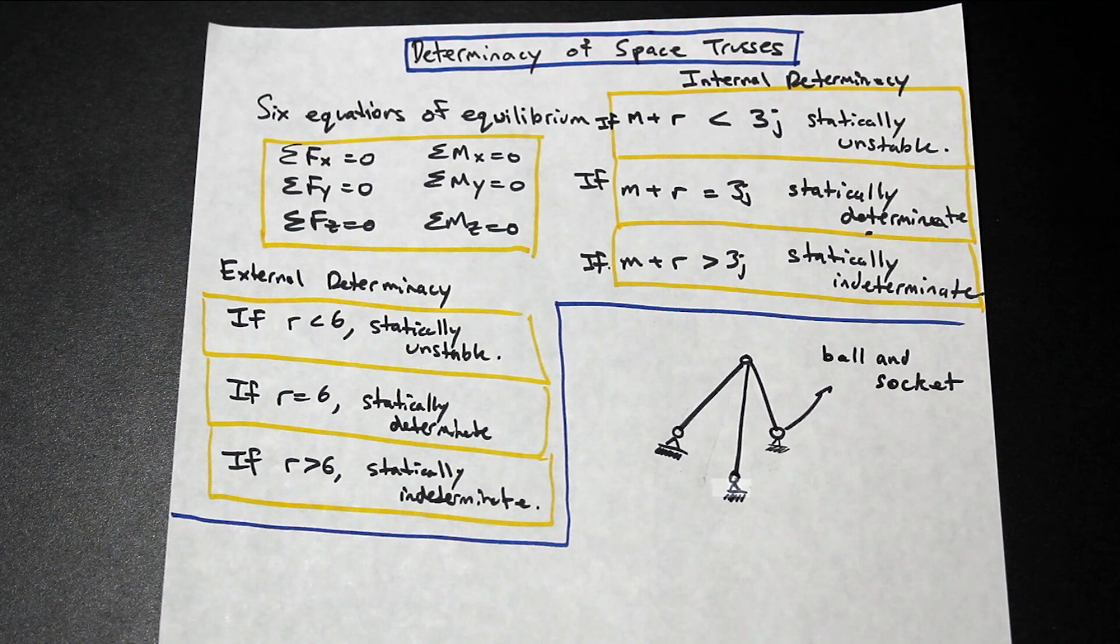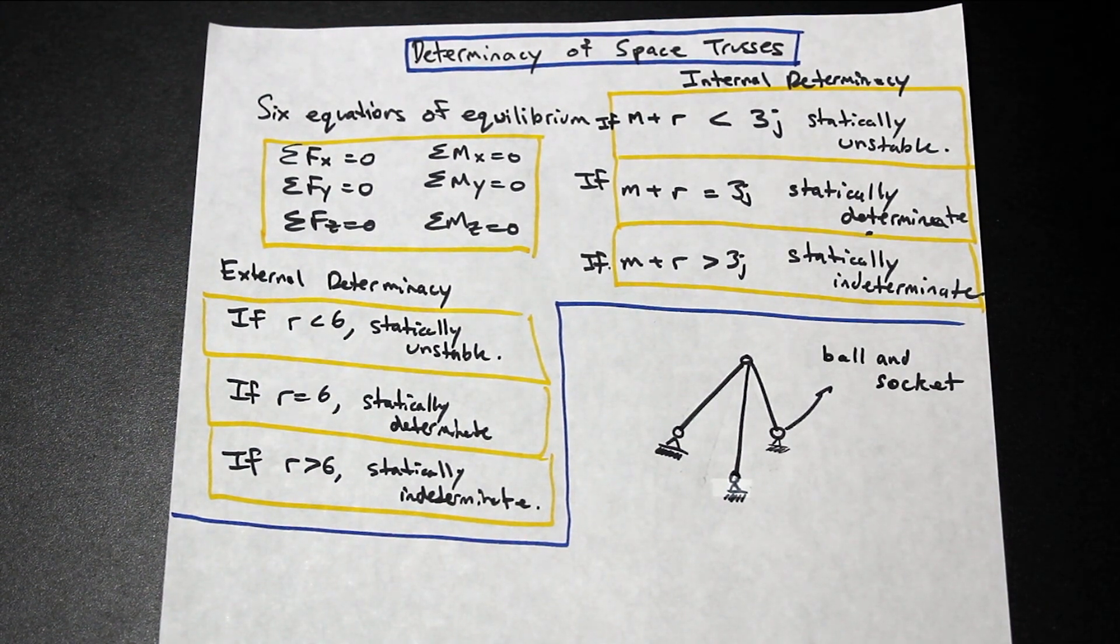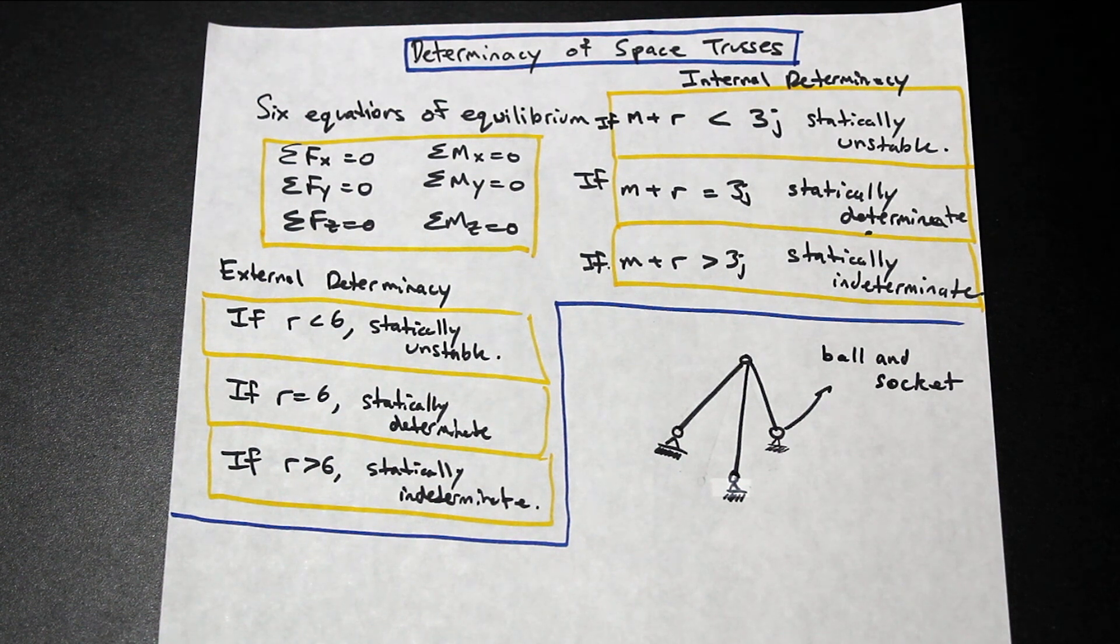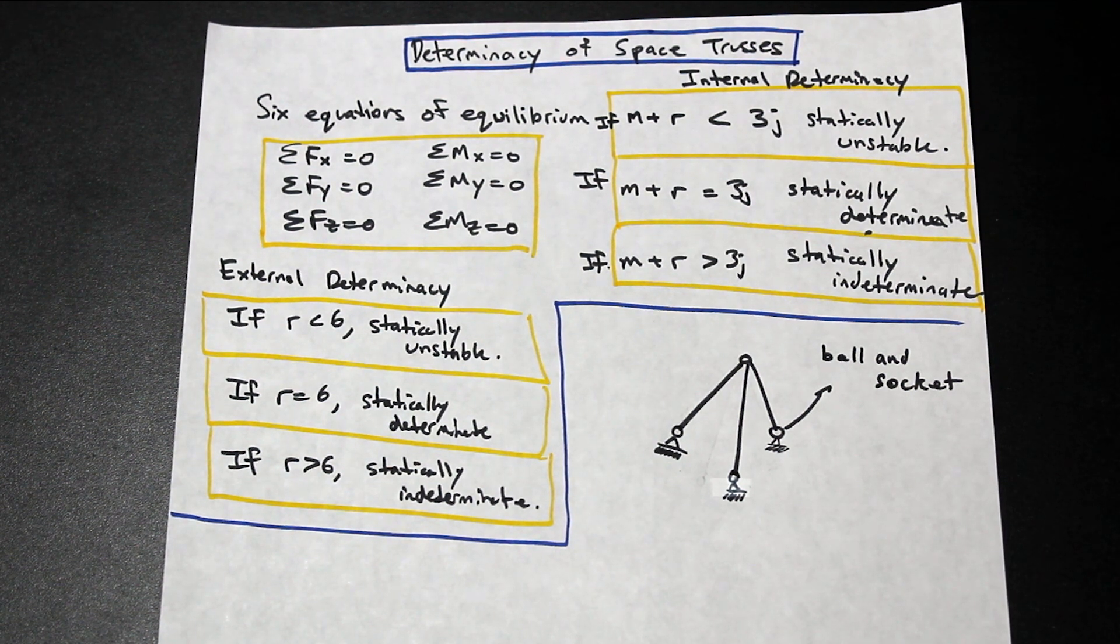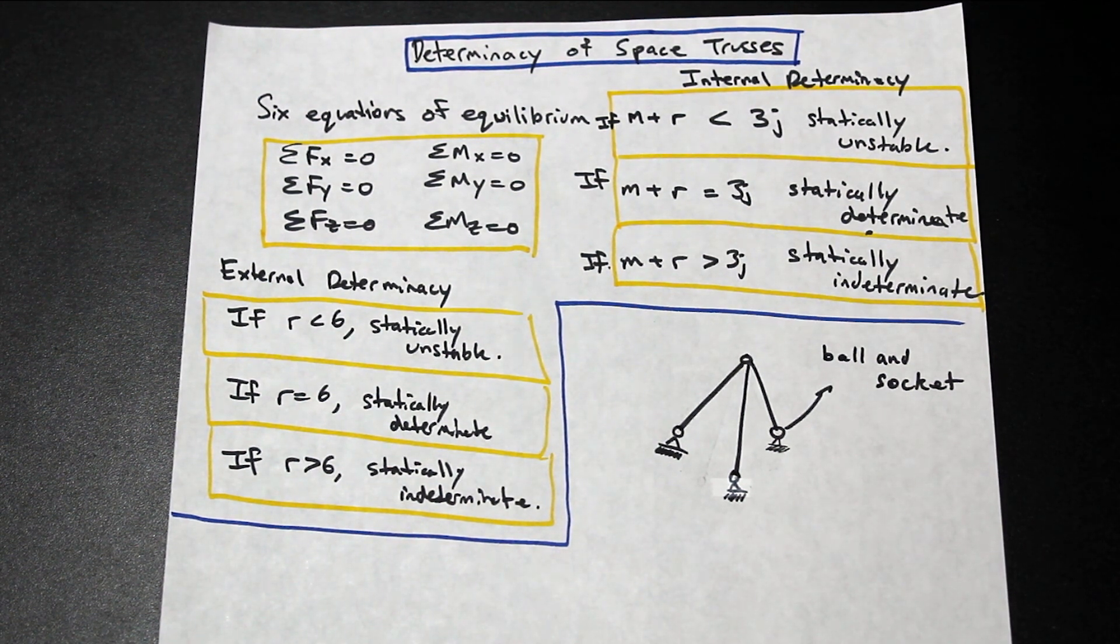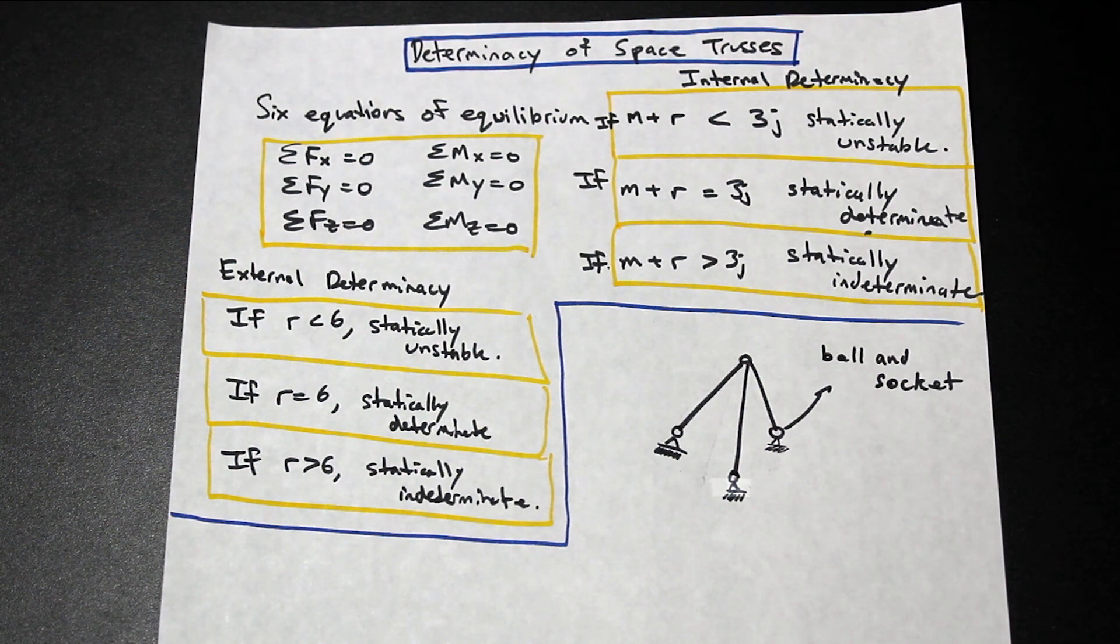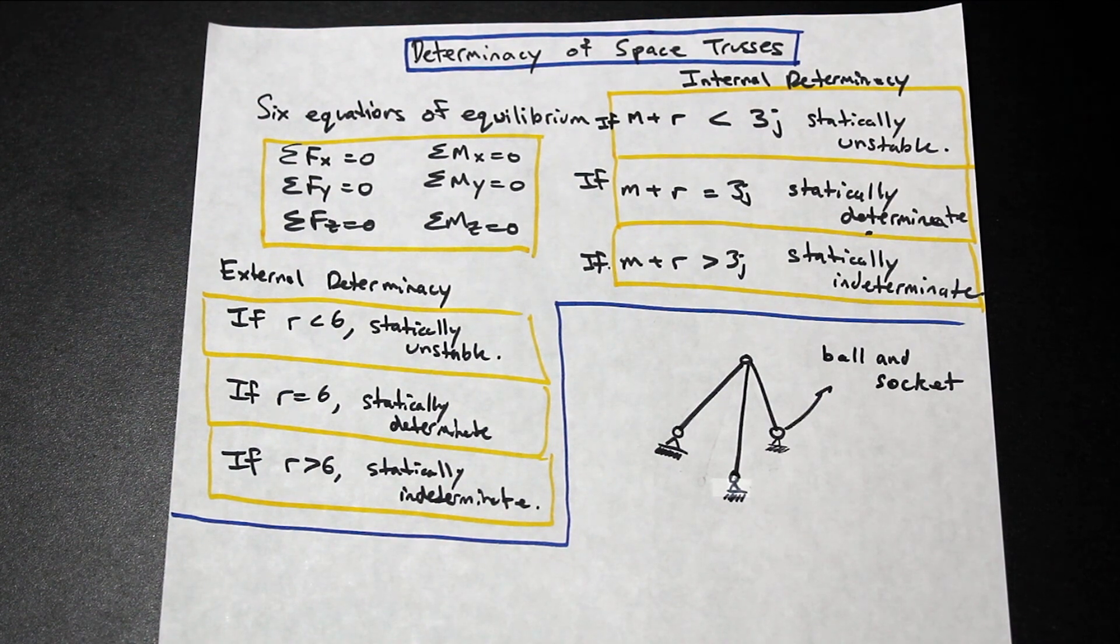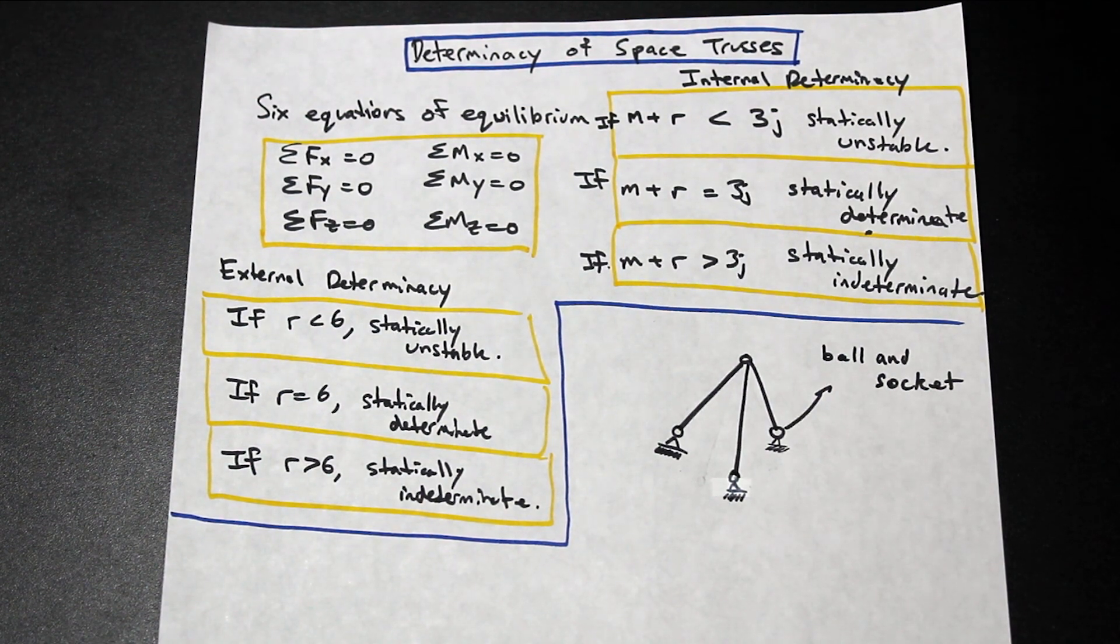So it's the same thing as in 2D as in 3D. 3D can be a little more confusing to conceptualize, but just take a look at the reaction, the support, and if a member can move in a particular direction, it's not restrained against that direction, there's no reaction. So that's just a really good kind of, just a general rule in order to kind of be able to think through these problems rather than just memorizing, because memorizing, as we always say, can get you in trouble during tests.